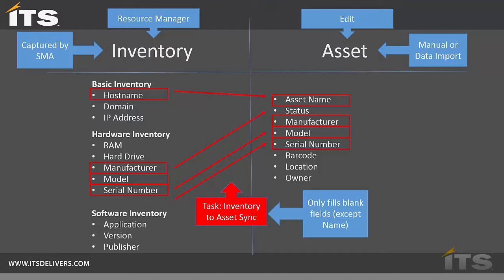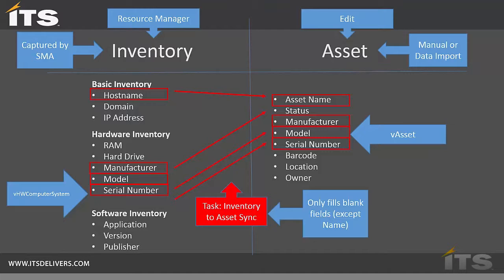One of the questions we hear a lot around asset management is why isn't my data accurate. We have to understand that hardware data comes from a different place than asset data. If values on the asset side are edited manually, you're going to have a different value in inventory than on the asset side. Also, if the Inventory to Asset Sync task is not running, you'll see missing data. If a report shows asset data but you can see manufacturer and model in Resource Manager, check whether that Inventory to Asset Sync task is running.